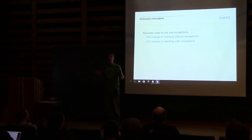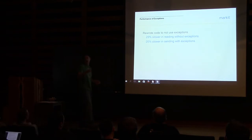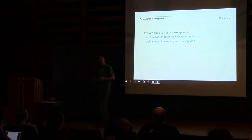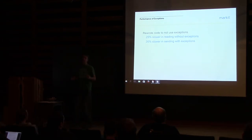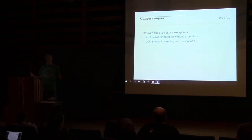I can't give you a definitive yes or no — use exceptions and your code will definitely be faster, or avoid them and it will definitely be faster. The real answer is that it depends, like a lot of things in software engineering. The only way to know for sure is to take real code, measure it, and see what the overhead actually is.